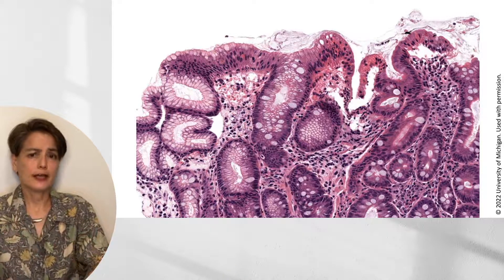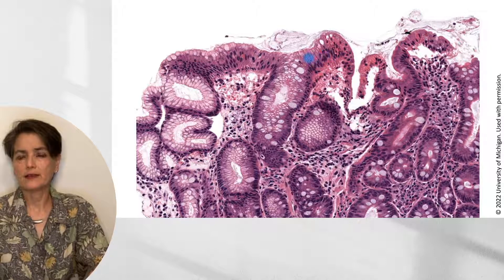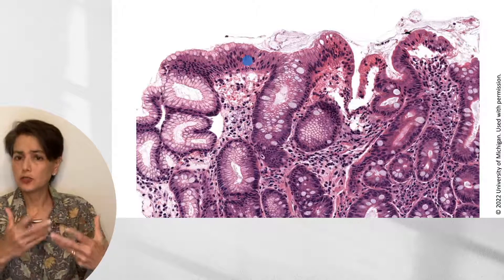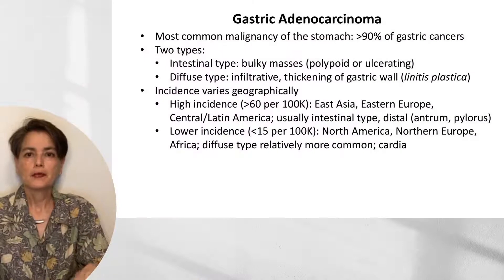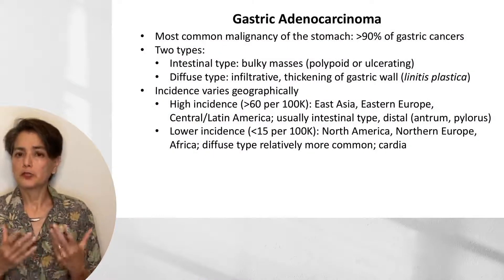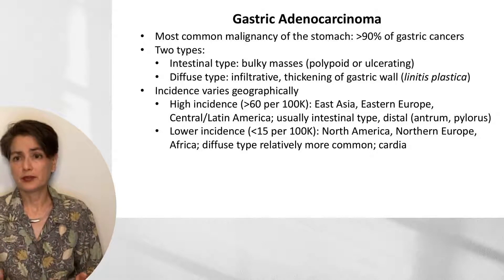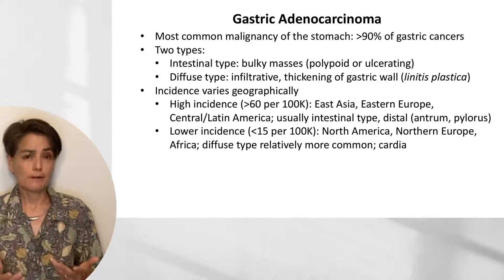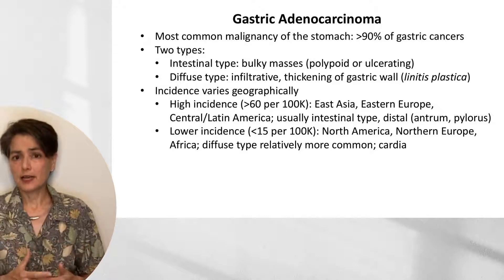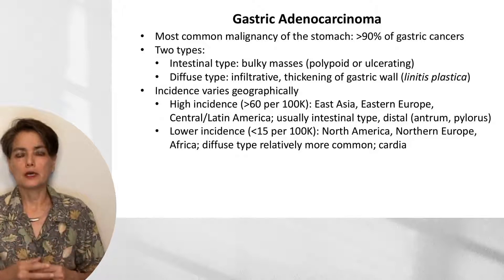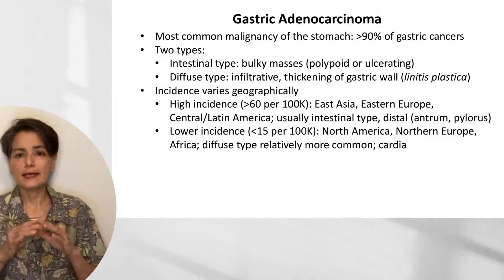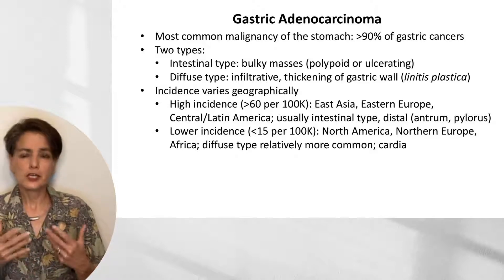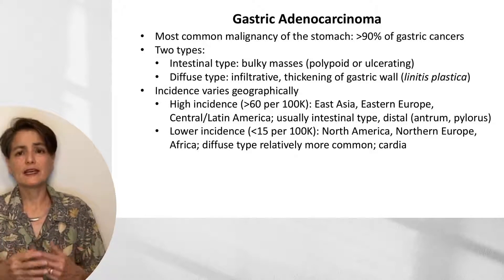With that introduction to H. pylori gastritis, keeping in mind that this metaplasia can lead towards dysplasia and carcinoma, let's start talking about carcinoma. Gastric adenocarcinoma is the most common malignancy of the stomach, accounting for more than 90% of gastric cancers. There are two types: intestinal type, which tends to be bulky and can present as either a polypoid mass or a bulky ulcerated mass; and diffuse type, which has an infiltrative invasive pattern apparent only as thickening of the gastric wall — referred to as linitis plastica.